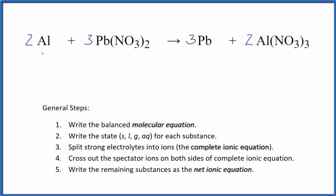To balance the net ionic equation for Al plus Pb(NO3)2, this is aluminum metal plus lead two nitrate, first we need to balance the molecular equation. So I've already balanced the molecular equation.